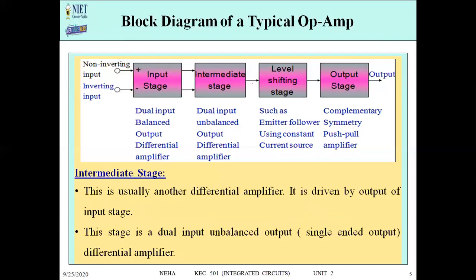Next is the intermediate stage. It is a dual input, unbalanced output differential amplifier. It has two inputs, but the output is only one — that is why it is an unbalanced output. When you feed the output of the input stage into the intermediate stage, it drives and processes the signal.